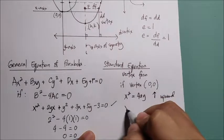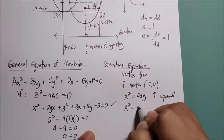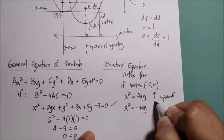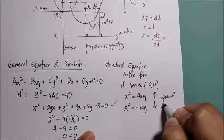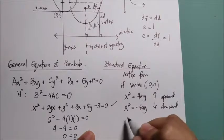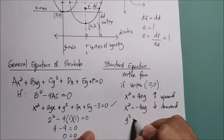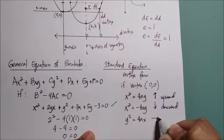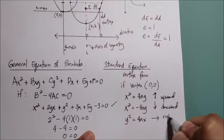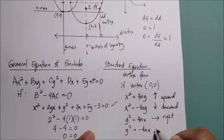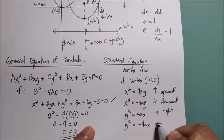If the equation is y² = 4ax, the parabola opens to the right. If the equation is y² = −4ax, the parabola opens to the left. These four forms cover all orientations of a parabola with vertex at the origin.